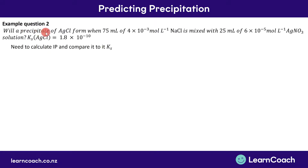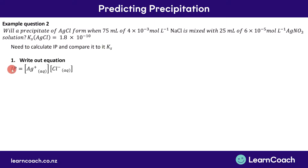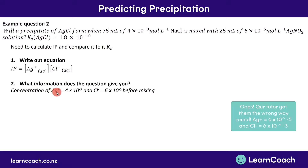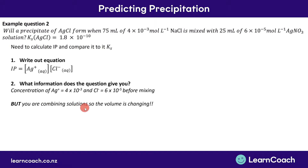Now a slightly harder example. Will a precipitate of AgCl form when you add 75 mL of a sodium chloride solution to 25 mL of a silver nitrate solution? They've given us the Ks for AgCl. We need to work out IP and compare it to Ks. The key complication is that the solutions are being mixed, so the volume changes — and when you change the volume, you have to change the concentrations.